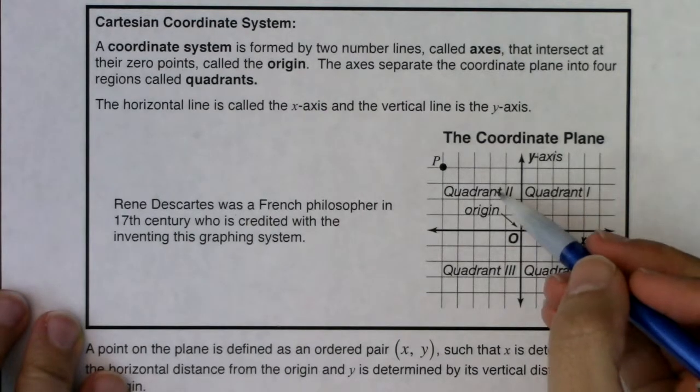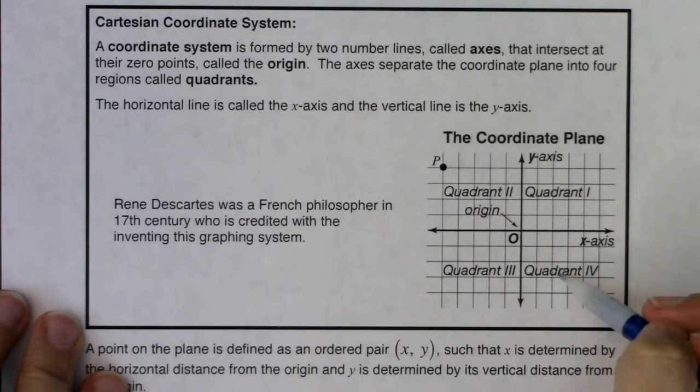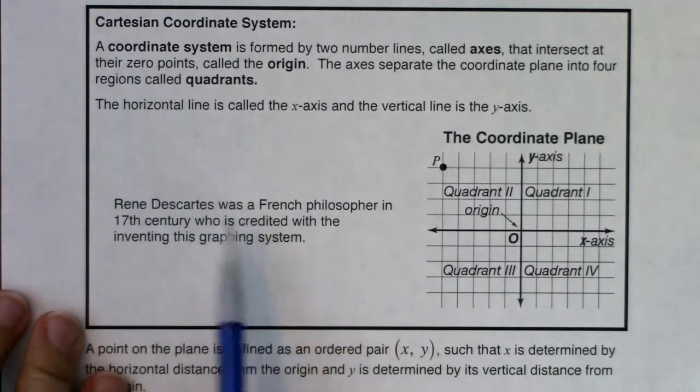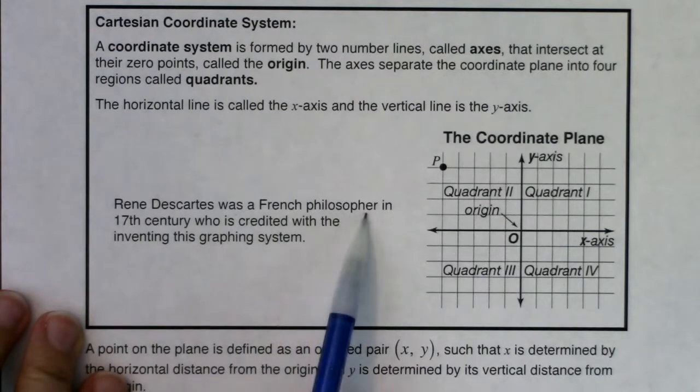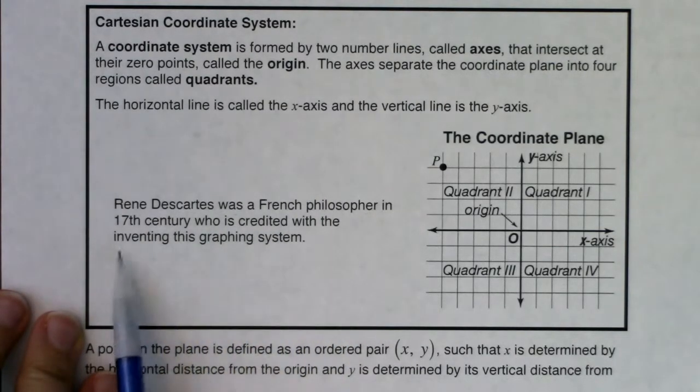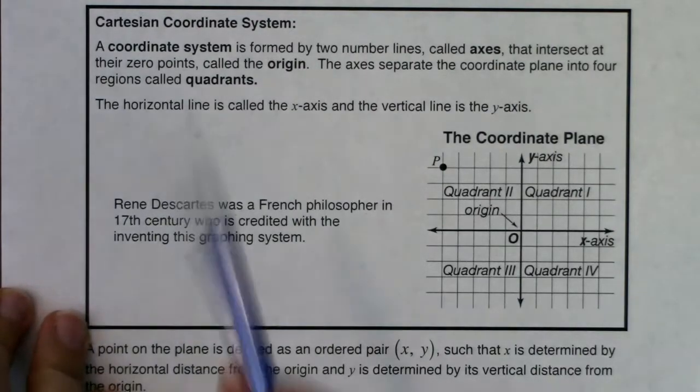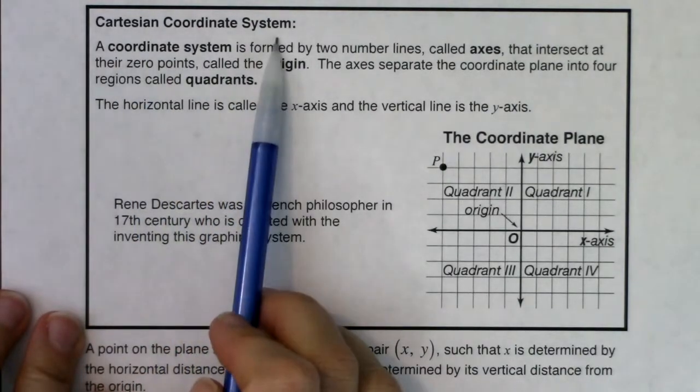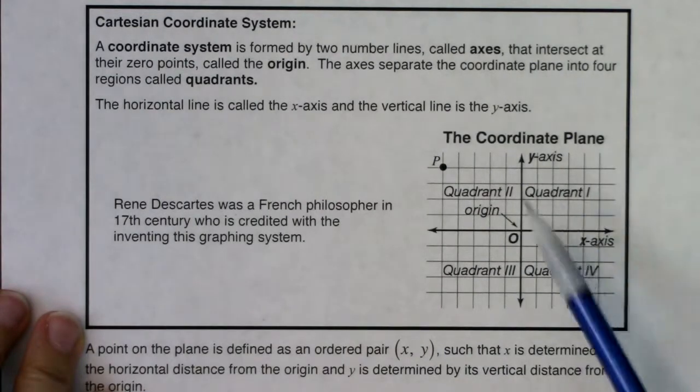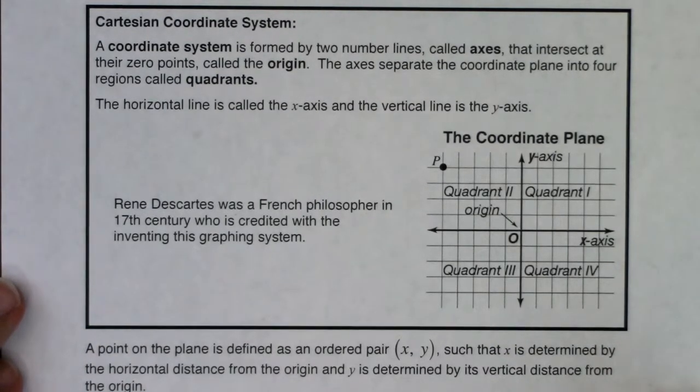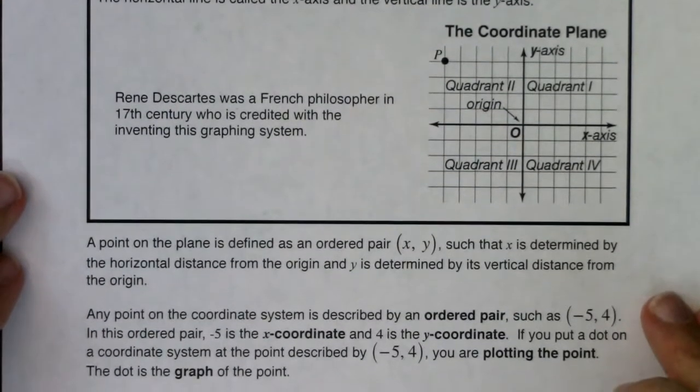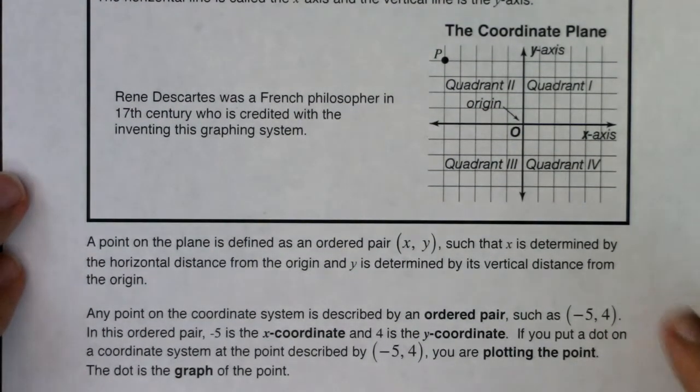So at some point in your math careers, you would have seen this graph before. So we've got our x-axis here, horizontal. Our y-axis here is vertical. And right here in the middle, where they're intersecting at their zero points, that is the origin. And here's Q1, Q2, Q3, and Q4, or the four quadrants. We call it the Cartesian coordinate system because back in the 17th century, Rene Descartes was a French philosopher who is credited with inventing this graphing system. I'm going to scoot this up just a little bit more so we can see some of the extra vocab.